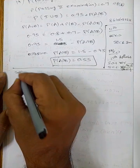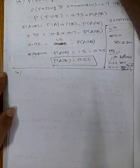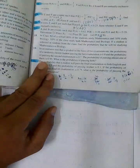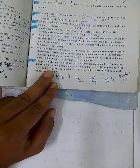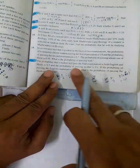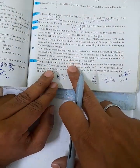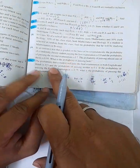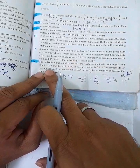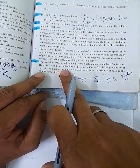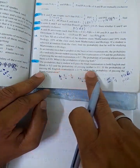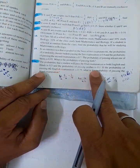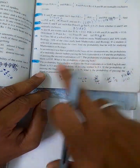Next, question 20: The probability that a student will pass the final examination in both English and Hindi is 0.5, and the probability of passing neither is 0.1. If the probability of passing English is 0.75, what is the probability of passing Hindi?